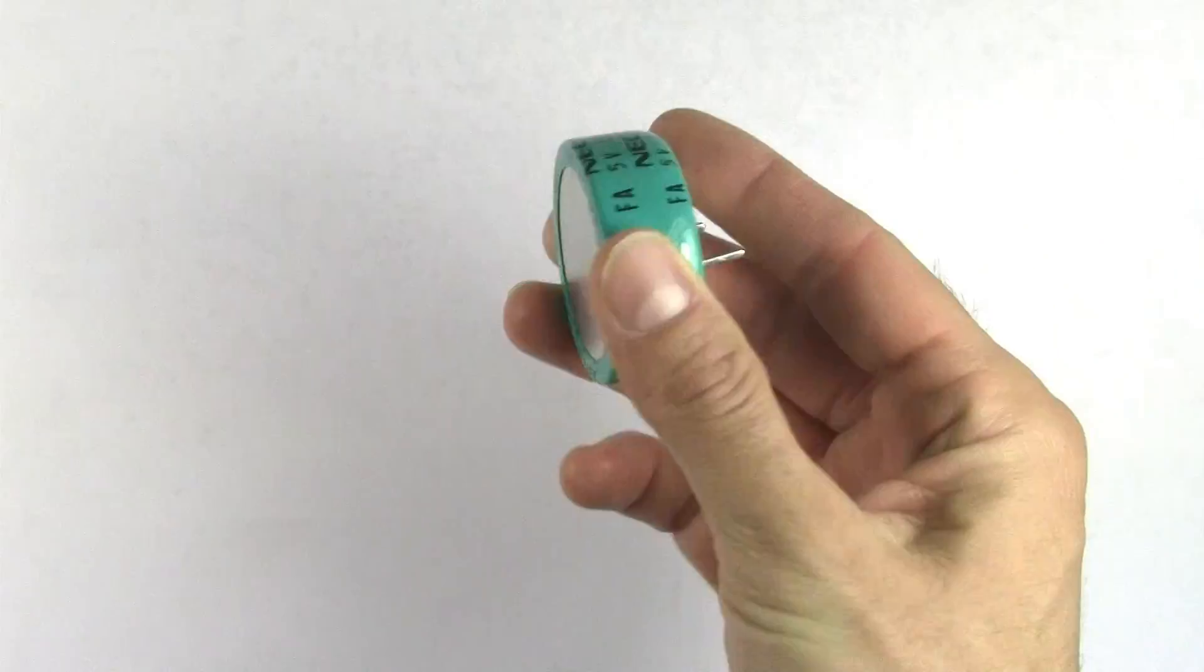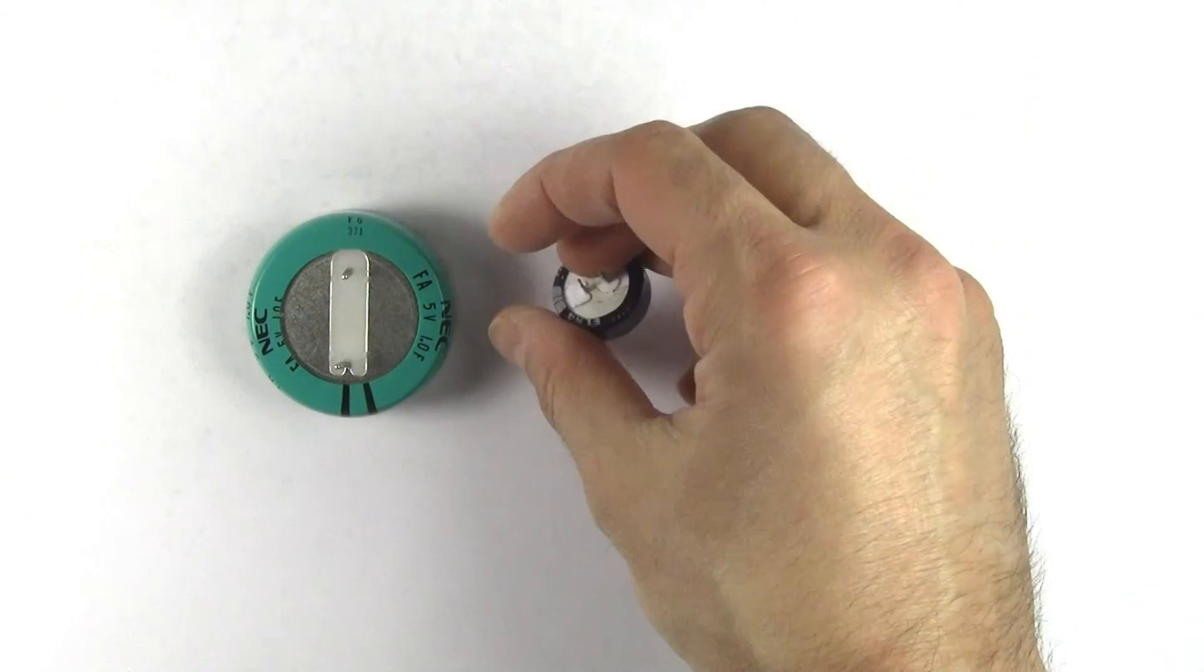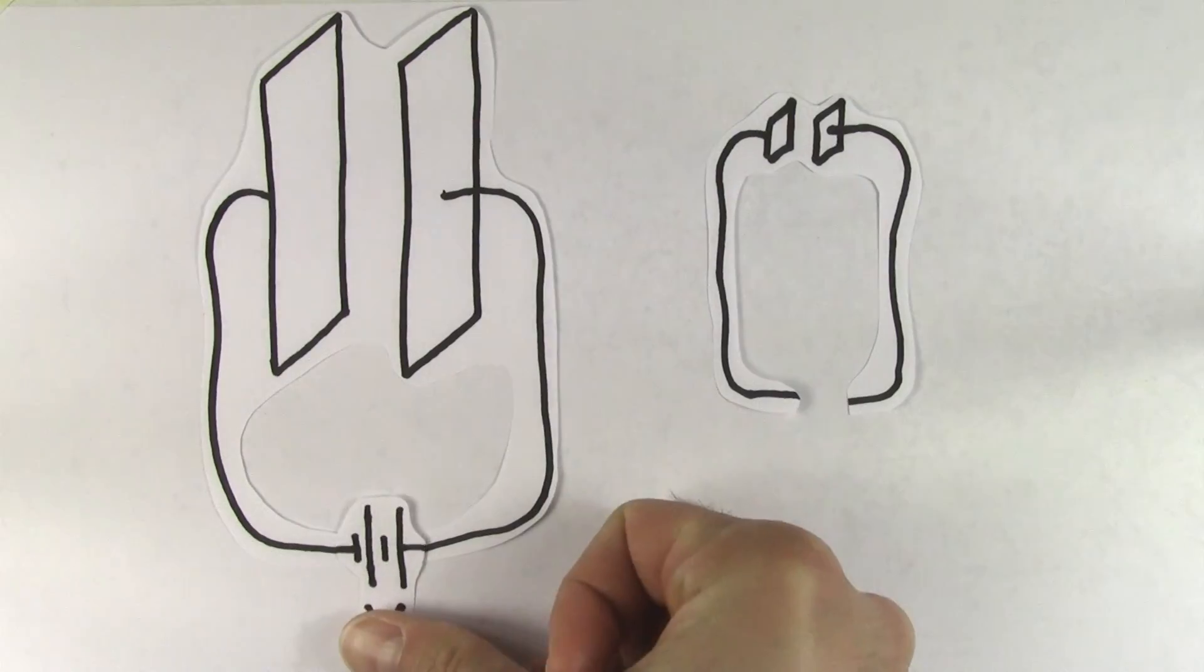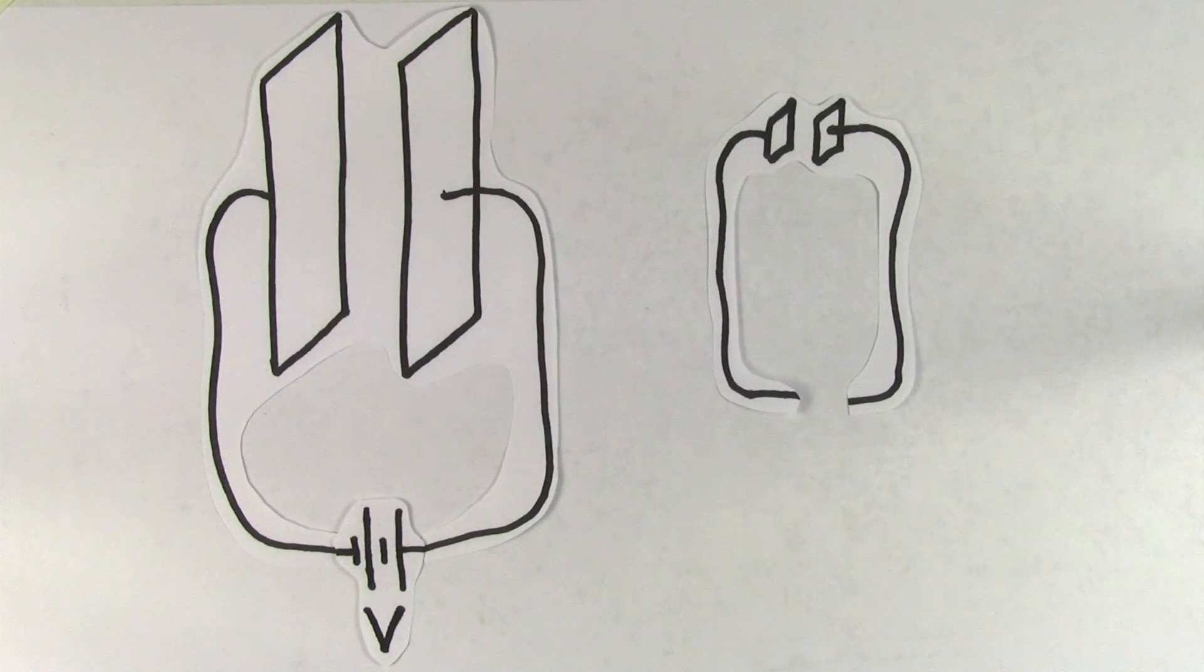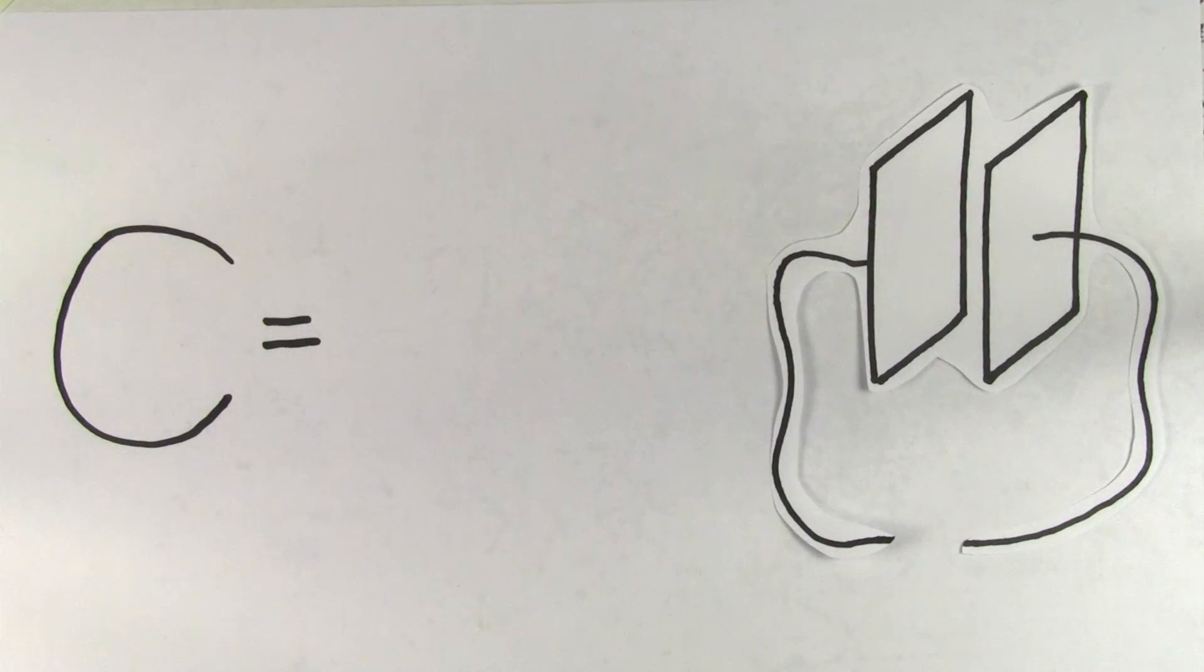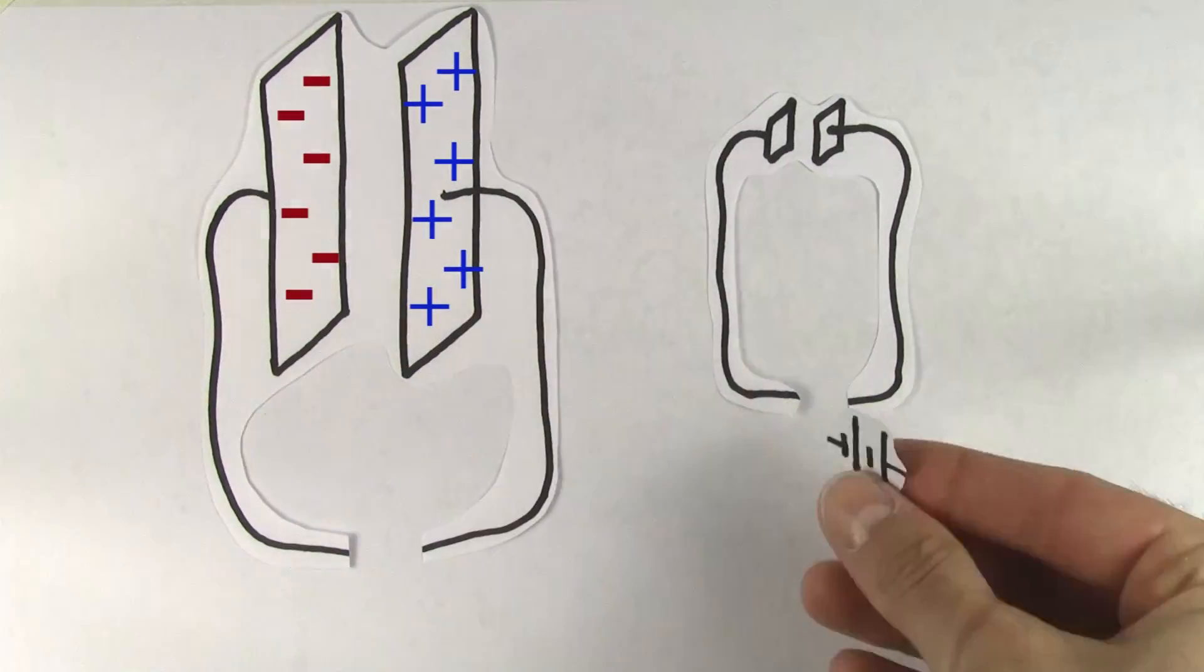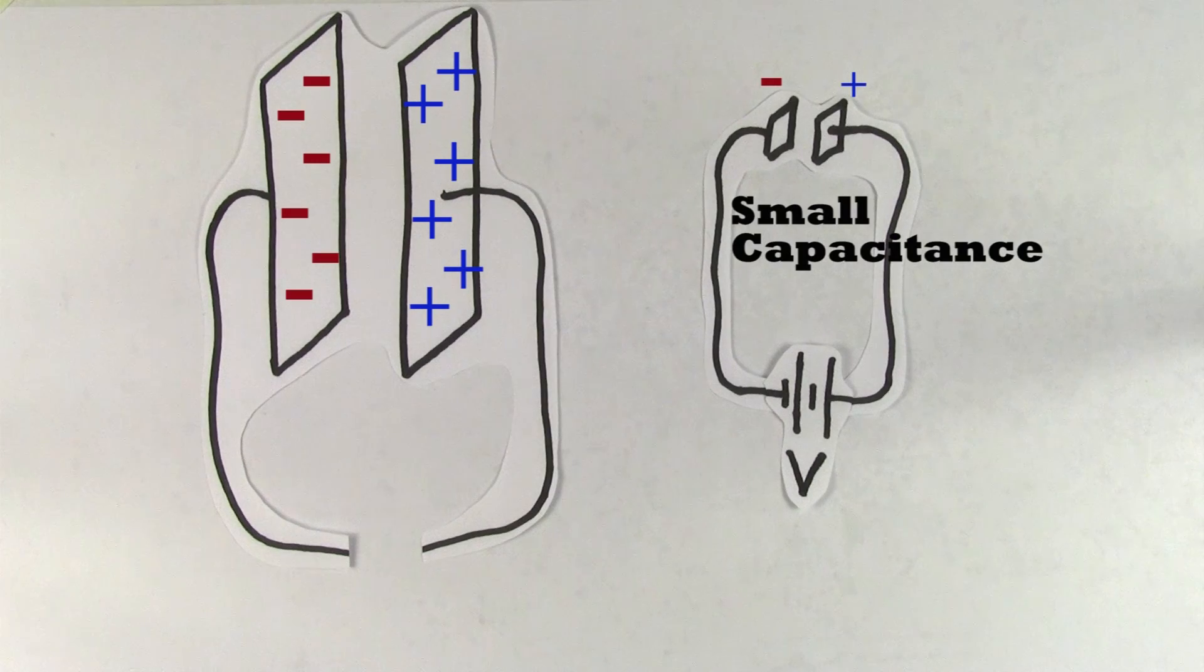So capacitors are devices used to store charge, but not all capacitors will store the same amount of charge. One capacitor hooked up to a battery might store a lot of charge, but another capacitor hooked up to the same battery might only store a little bit of charge. The capacitance of a capacitor is the number that tells you how good that capacitor is at storing charge. A capacitor with a large capacitance will store a lot of charge, and a capacitor with a small capacitance will only store a little charge.